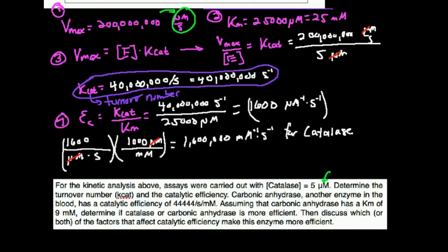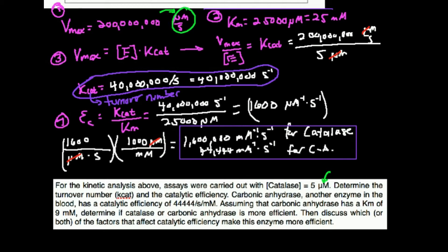The catalytic efficiency of carbonic anhydrase is 44,444 inverse millimolar inverse second. Now both are in the same units. When comparing catalytic efficiencies, they must be in exactly the same units — same time units, same concentration units — and whichever is higher is more efficient. So clearly, catalase at 1,600,000 is far more efficient than carbonic anhydrase at 44,444 inverse millimolar inverse second.